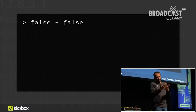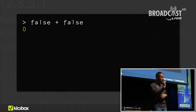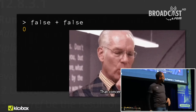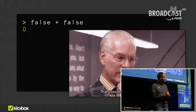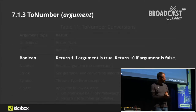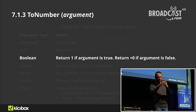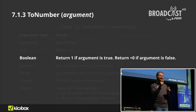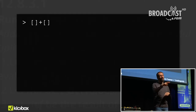False plus false — just zero. We actually have to travel to another part of ECMAScript to find the answer to this quirky one. The runtime semantics for the plus operator utilize the ToNumber method, which specifically states that a one should be returned for true and a zero for false. Now it's going to get really weird, so buckle up.